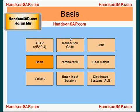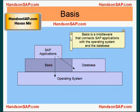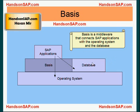Basis is a middleware that connects SAP applications with the operating system and the database. The first layer is the operating system, running on the hardware. On top of the operating system, you have the basis software running, as well as the database. Oracle database is mostly used with SAP applications. The SAP front-end applications are then running on top of the basis.